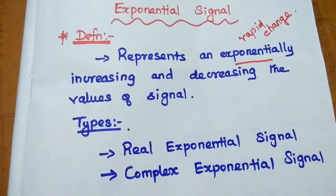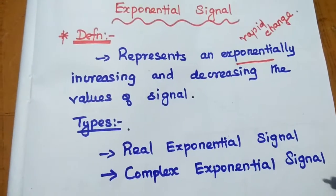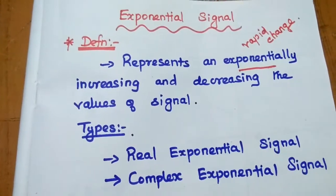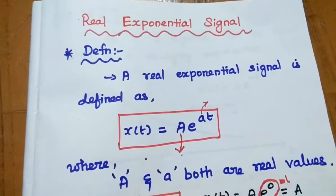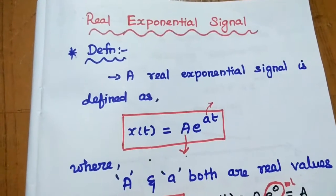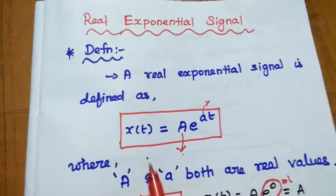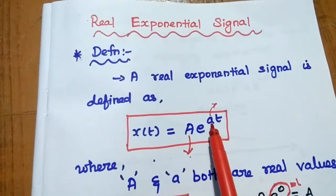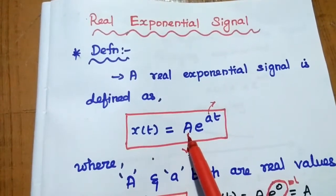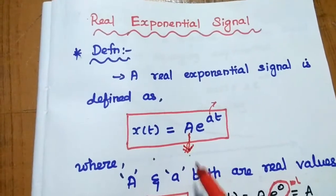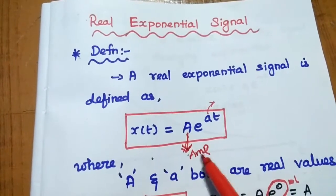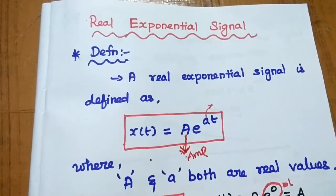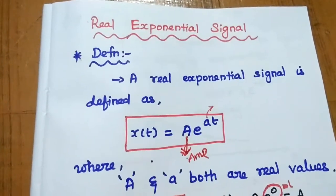There are two types of exponential signal: one is real exponential and another one is complex exponential. Let's discuss one by one. A real exponential signal is defined as x(t) = A·e^(at). Here capital A represents the amplitude of the signal, and small 'a' is mainly used to define the shape of the exponential signal.